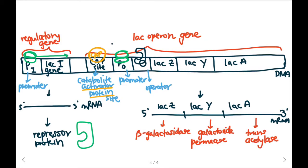And each of these proteins have very important functions. So beta-galactosidase is going to help us break down lactose. Galactoside permease is going to help us bring the lactose into the cell. And transacetylase is also a protein, but there's really not much to know about that.